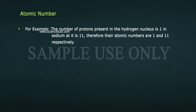For example, the number of protons present in the hydrogen nucleus is 1, in sodium atom it is 11. Therefore, their atomic numbers are 1 and 11 respectively.